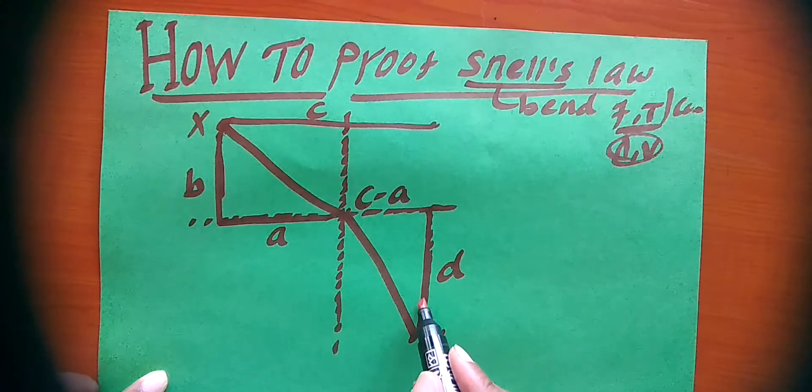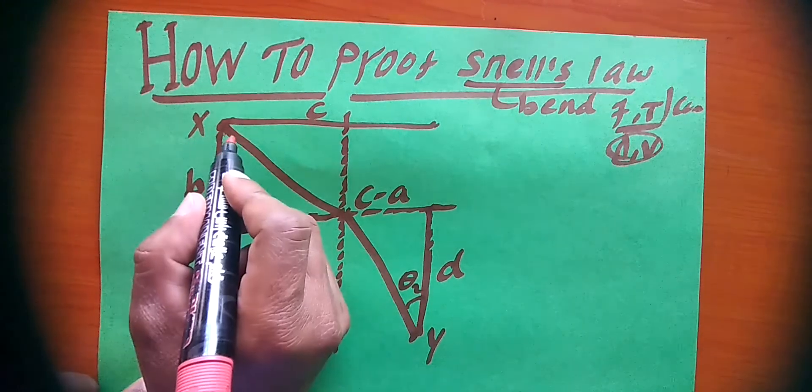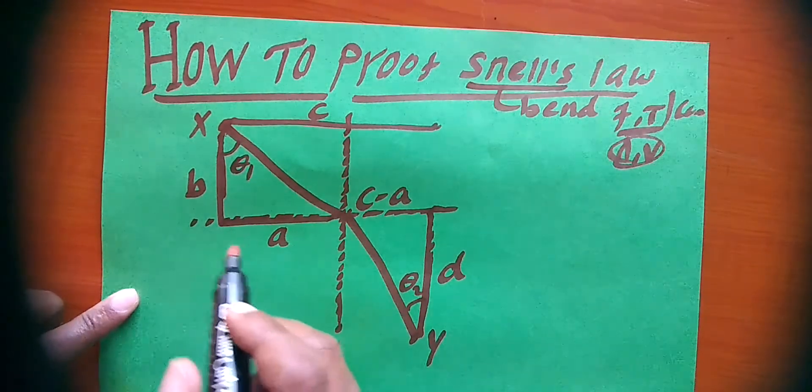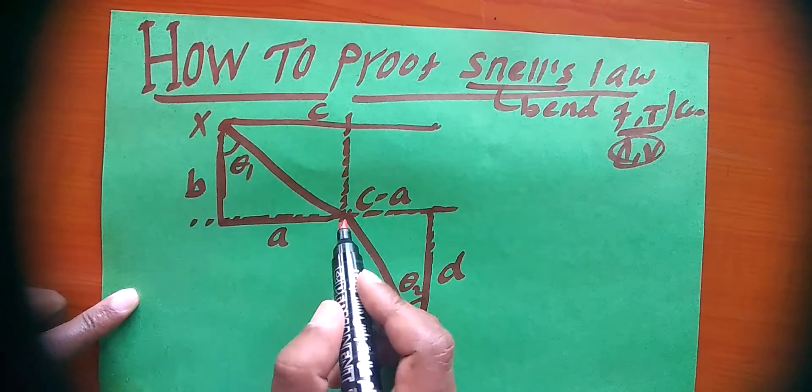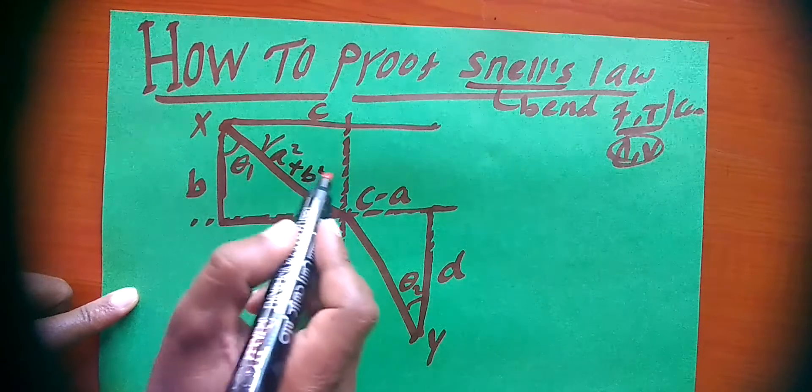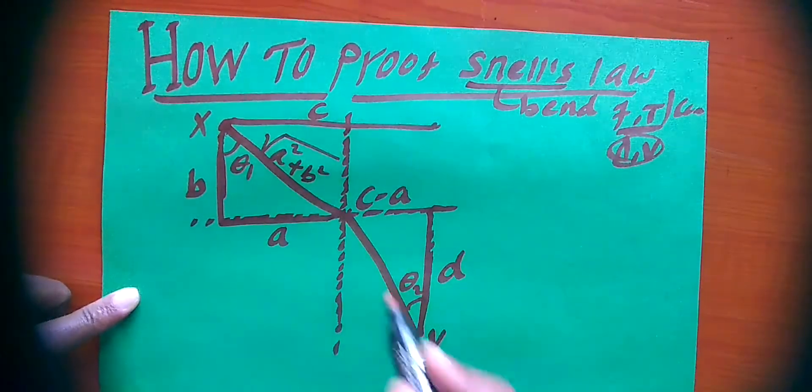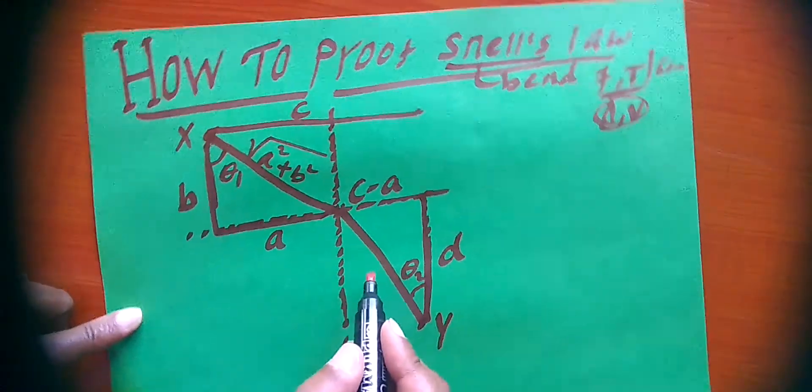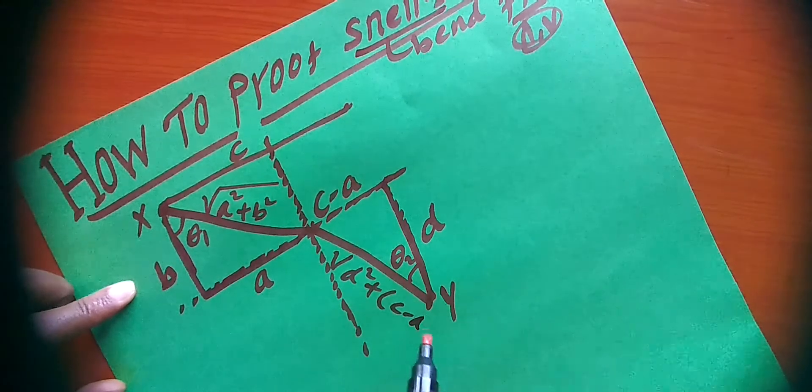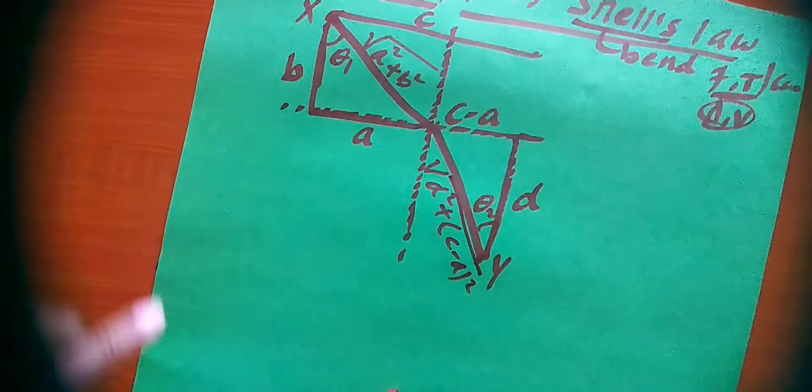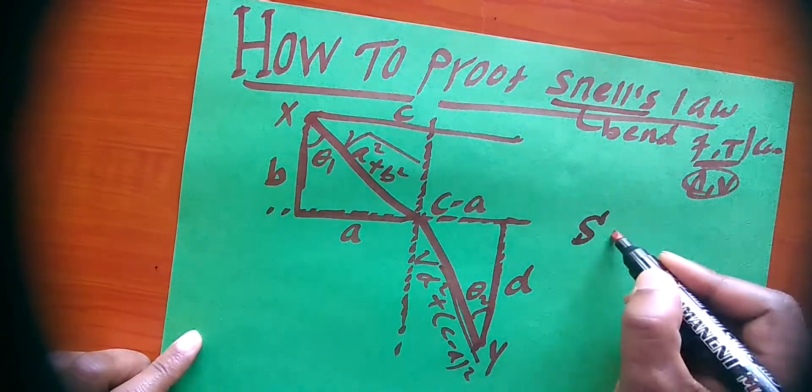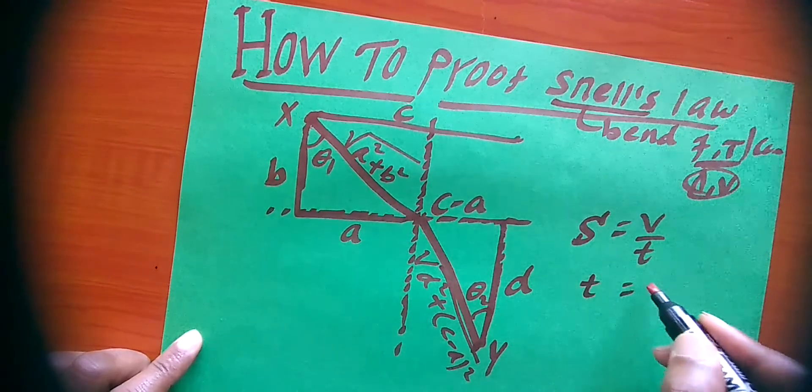We have angle theta one and angle theta two. By the Pythagorean theorem, the distance in the first medium is square root of a squared plus b squared. The distance in the second medium is square root of d squared plus c minus a the whole squared. Distance equals speed times time, so time equals distance over speed.